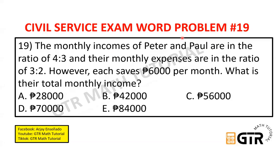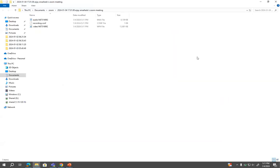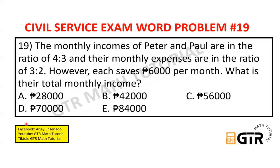Civil service exam word problem number 19. The monthly incomes of Peter and Paul are in the ratio of 4 is to 3 and their monthly expenses are in the ratio of 3 is to 2. However, each saves 6,000 pesos per month. What is their total monthly income? The choices are 28,000, 42,000, 56,000, 70,000, and 84,000 pesos.